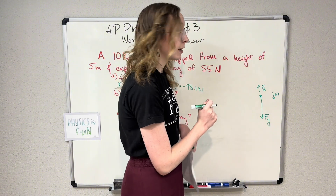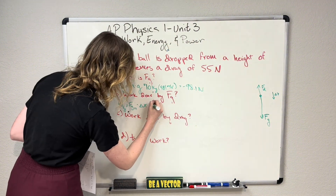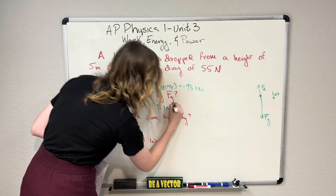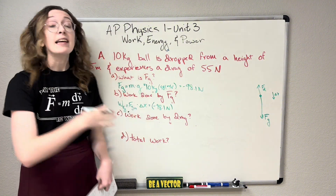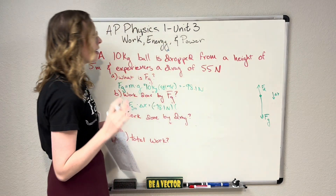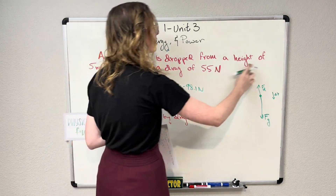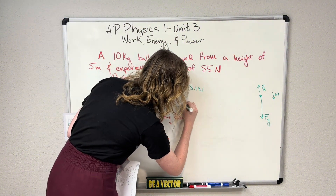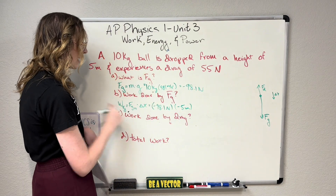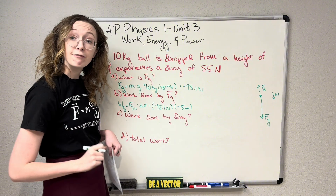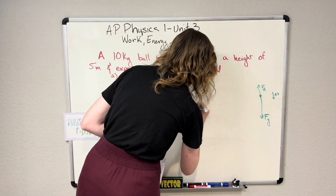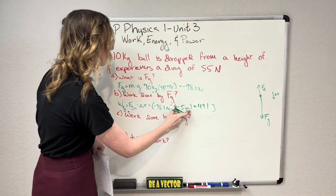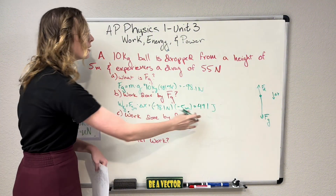Our object is falling directly downward, so the component of our force due to gravity that is also pointed downward is all of it. We multiply our force due to gravity, which is negative 98.1 newtons, by our displacement. Displacement is a vector, so we include a sign: it is falling from a height of 5 meters, falling down, so our displacement is negative 5 meters. So the work is negative 98.1 newtons times negative 5 meters, which gives us 491 joules.